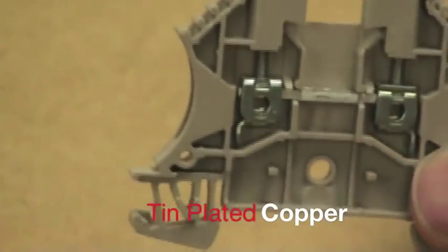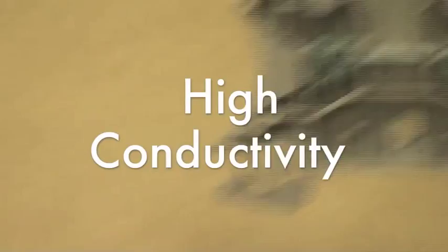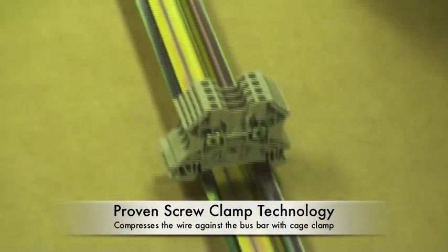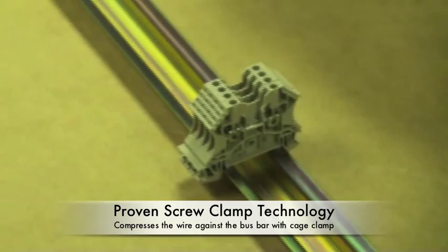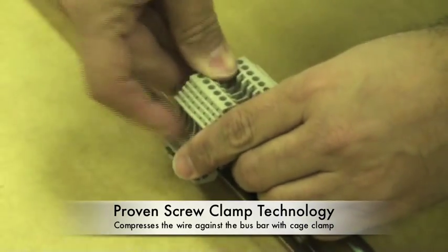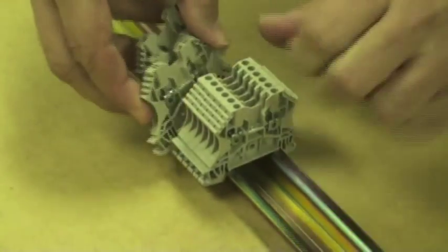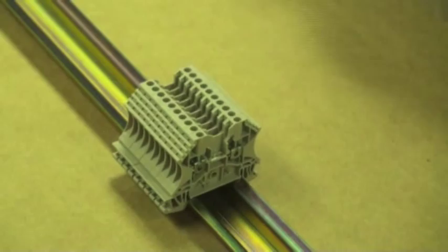The current bars are constructed of tin-plated copper to ensure high conductivity and corrosion resistance. The Weidmuller W-series terminal block product line employs the well-proven screw clamp technology that compresses the wire against the bus bar by using a cage clamp constructed of hardened steel. The special design of this clamp provides exceptional contact force as well as vibration resistance.